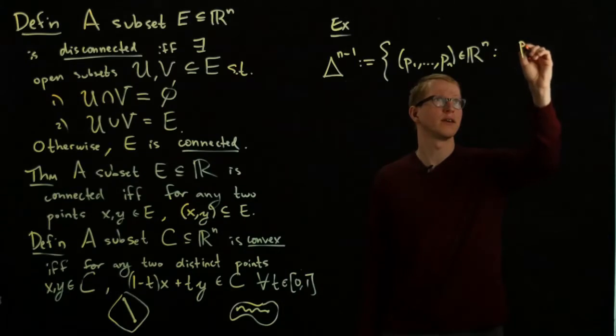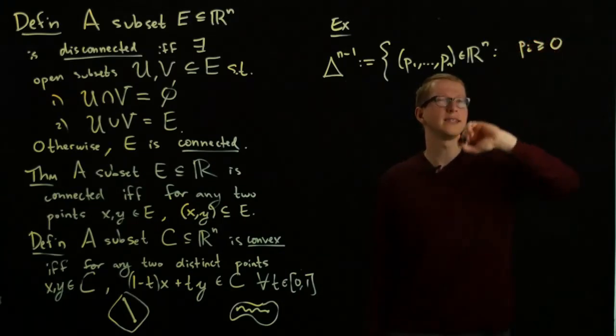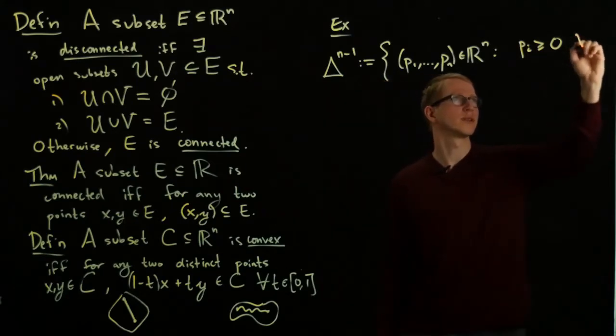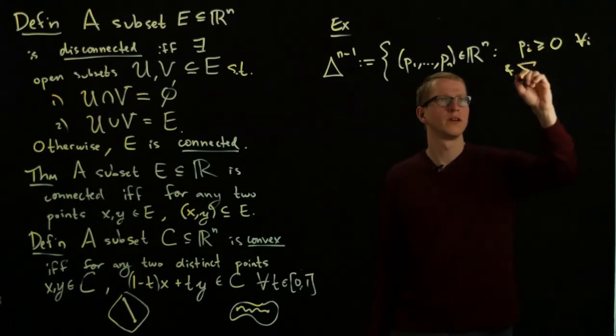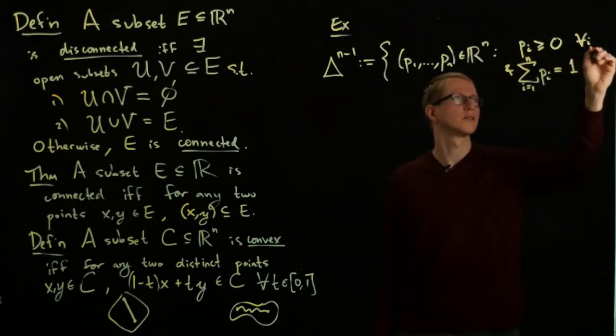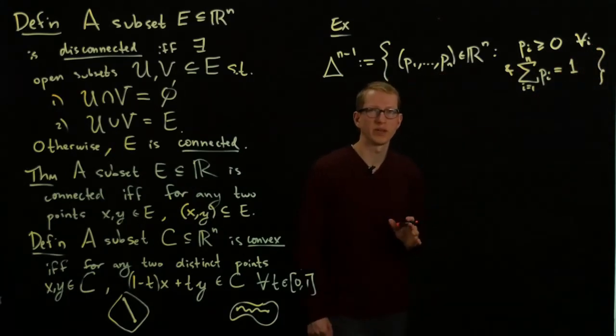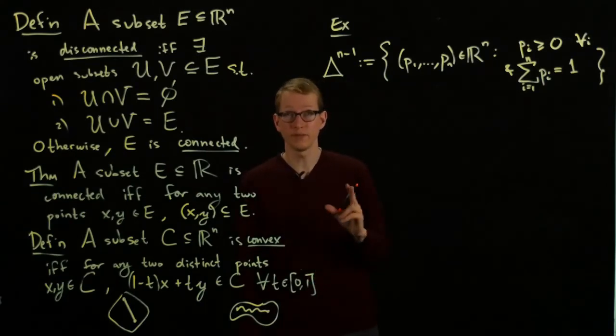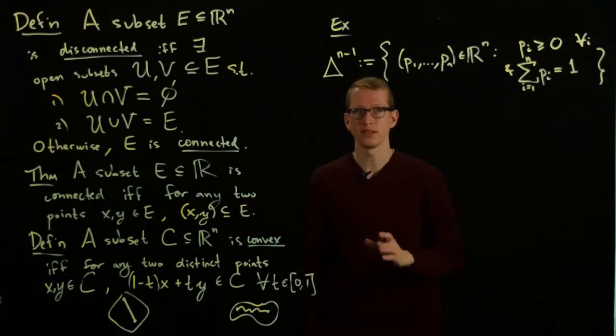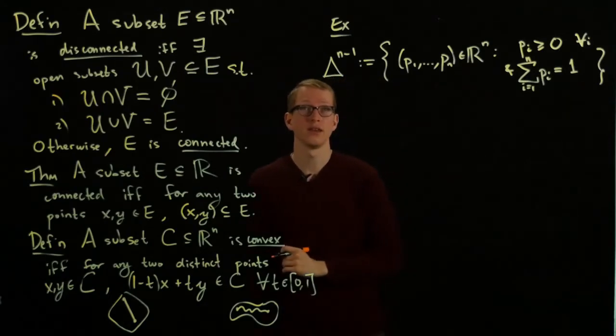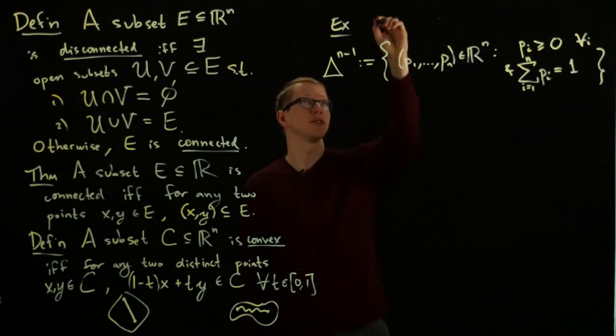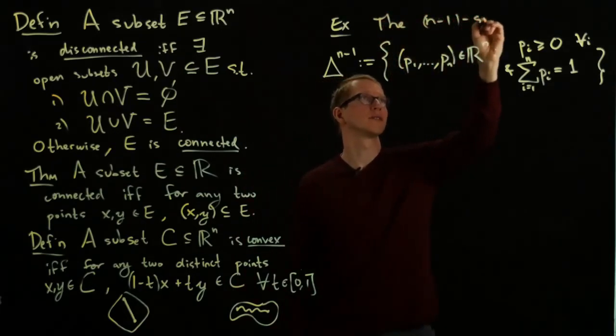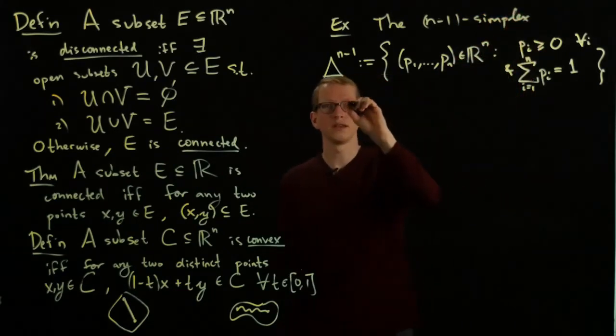satisfying a very special constraint: each of the Pi's are at least 0 for all i, and the sum of the Pi's is equal to 1. This sounds a little bit like probability theory, and in fact it is. Any finite probability space is exactly modeled by such a set, by this simplex. The n-1 simplex is convex.